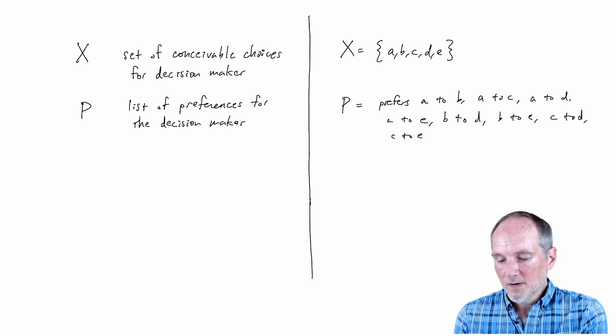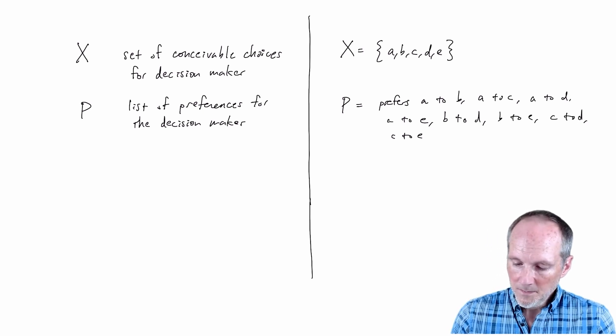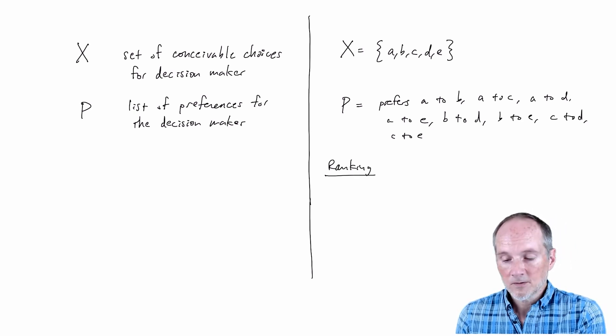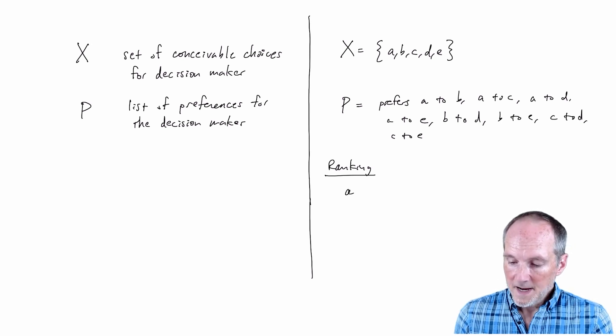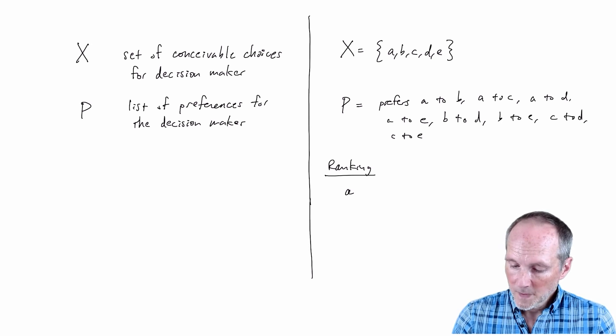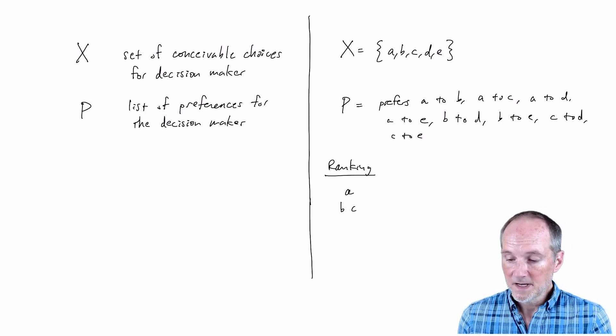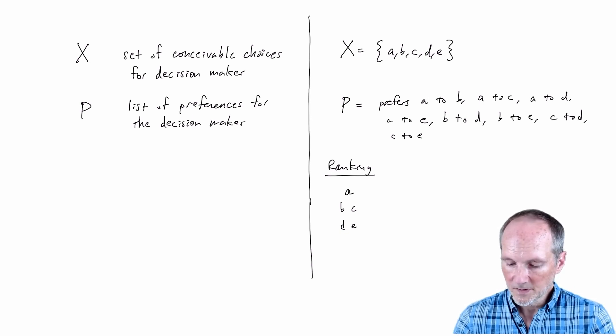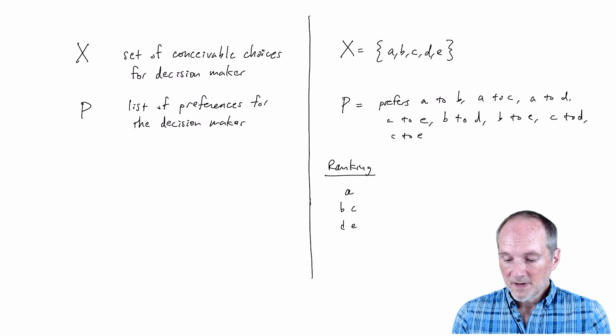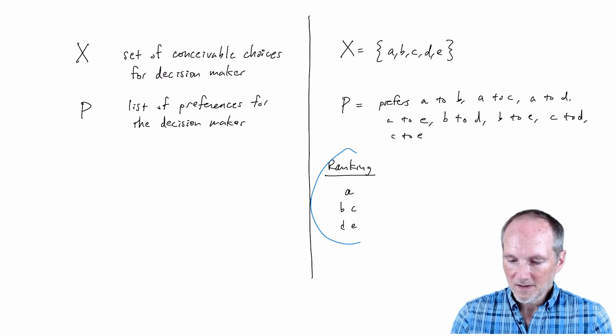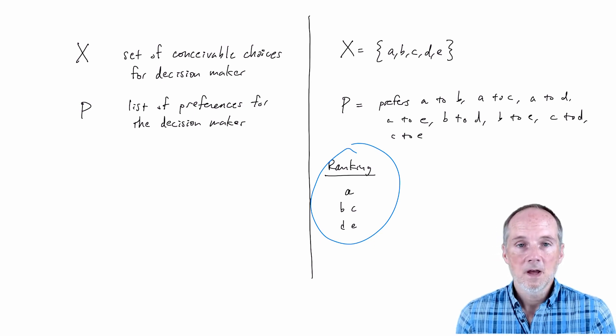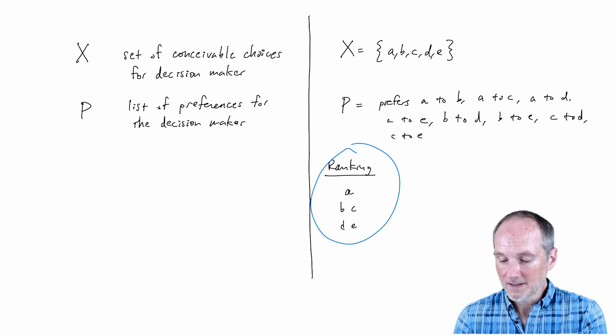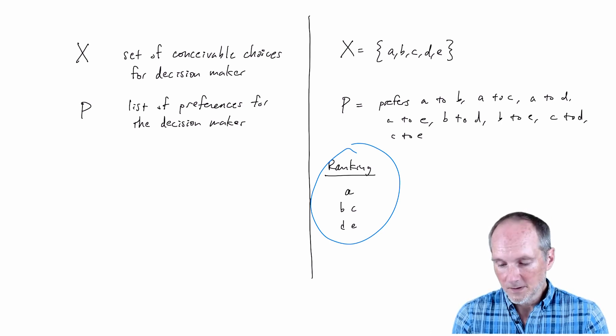In fact if you think about it there's a more efficient way to describe this list of preferences because I've actually described a decision maker with a particular ranking of these choices. A is preferred to everything else I'm going to put that at the top of the ranking. B and c are both preferred to d and e. D and e are not preferred to anything so they're going to be at the bottom of the ranking, b and c are in the middle. This would actually be a much more efficient way of describing this person's preferences rather than write out that list and we would never actually write out the list of preferences the way I did it first we would just describe the ranking or you know there's even other ways of doing it.